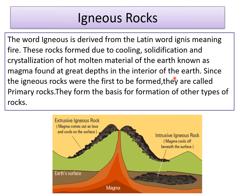Since the igneous rocks were first to be formed, they are called primary rocks. They form the basis for the formation of other types of rocks.